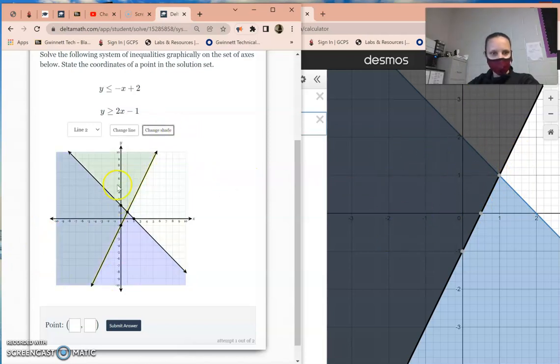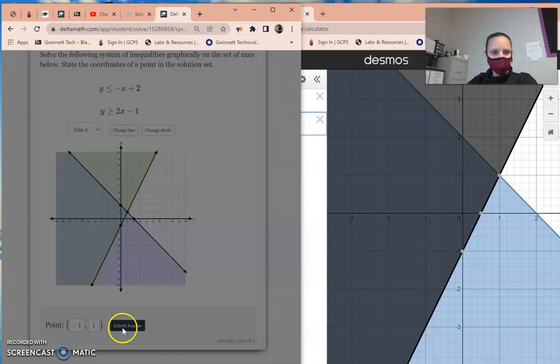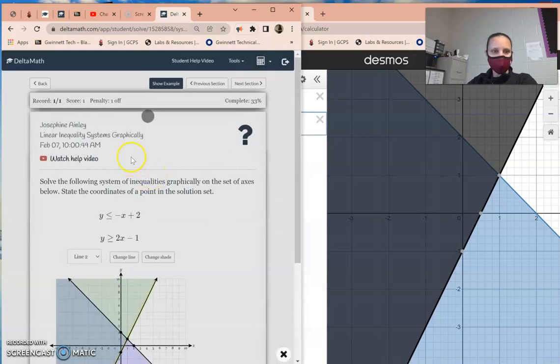Again, your solution is anywhere where both the green and purple or blue and black, in that case, is. So anything inside here, stay away from dotted lines. So you can actually pick a point on these lines. That's okay because they're solid. Solid includes. But just as a general rule of thumb, just stay away from the lines. But you just have to stay away from the dotted lines. So anything in here is what you're going to pick. So I'm going to pick this point right here, which is negative 1, 1. Again, anything in here is going to work. So negative 1, 1 for me.